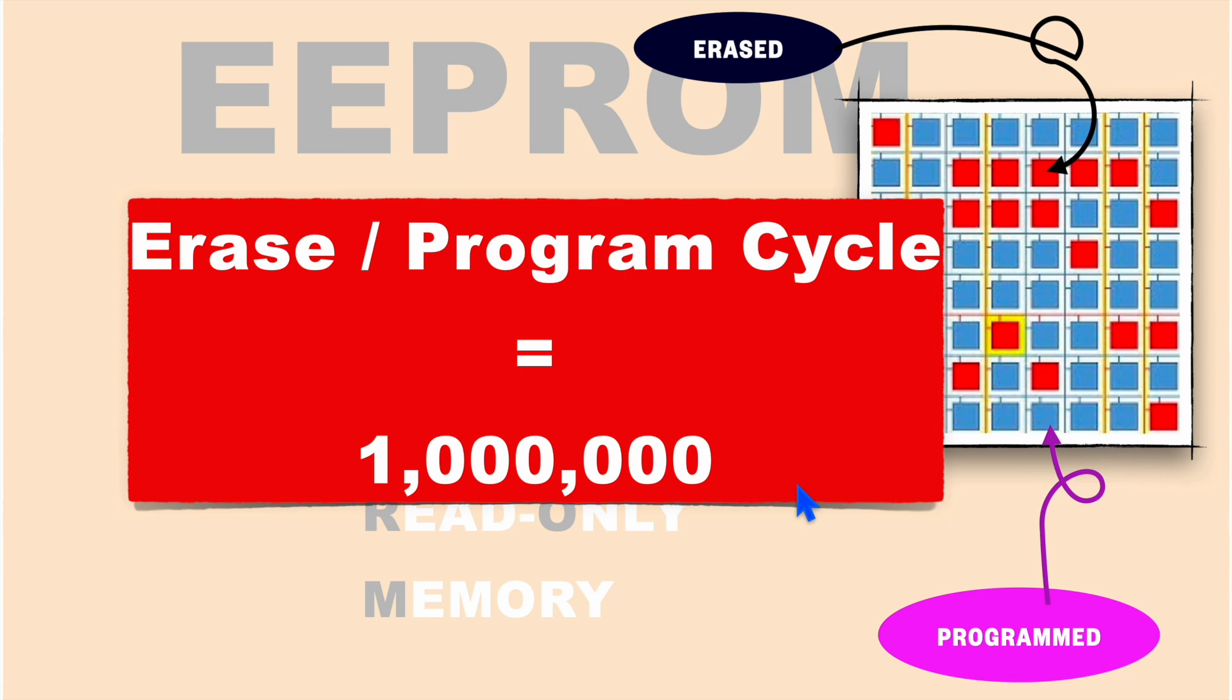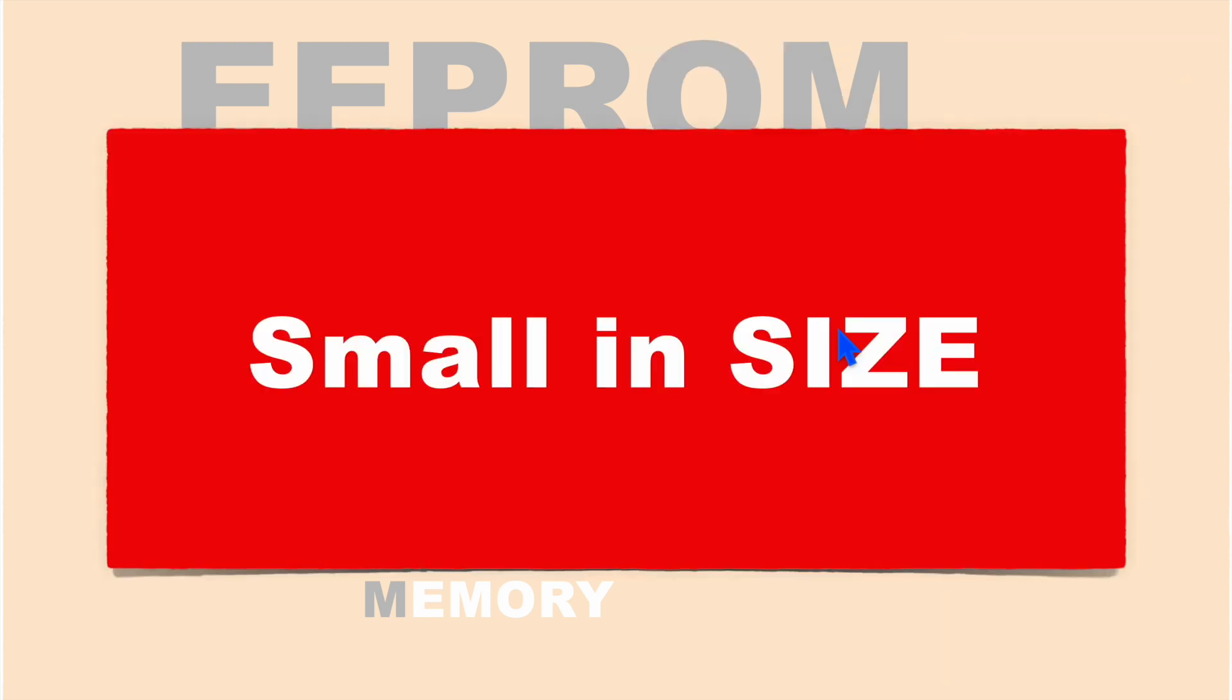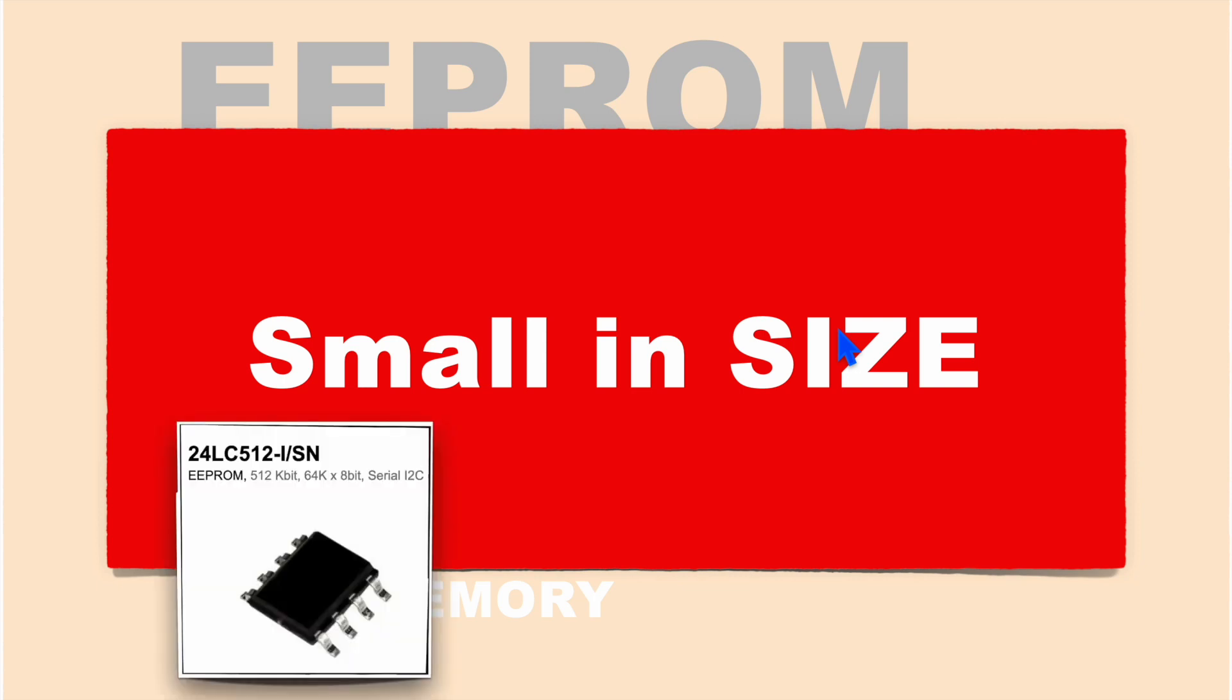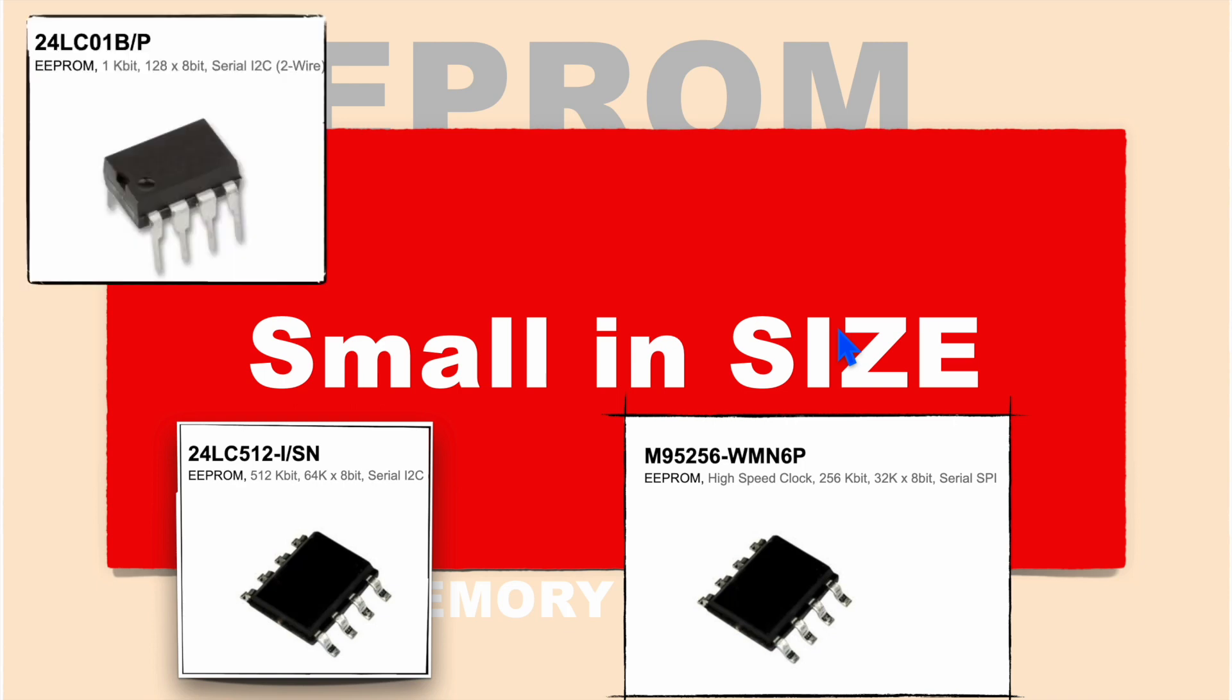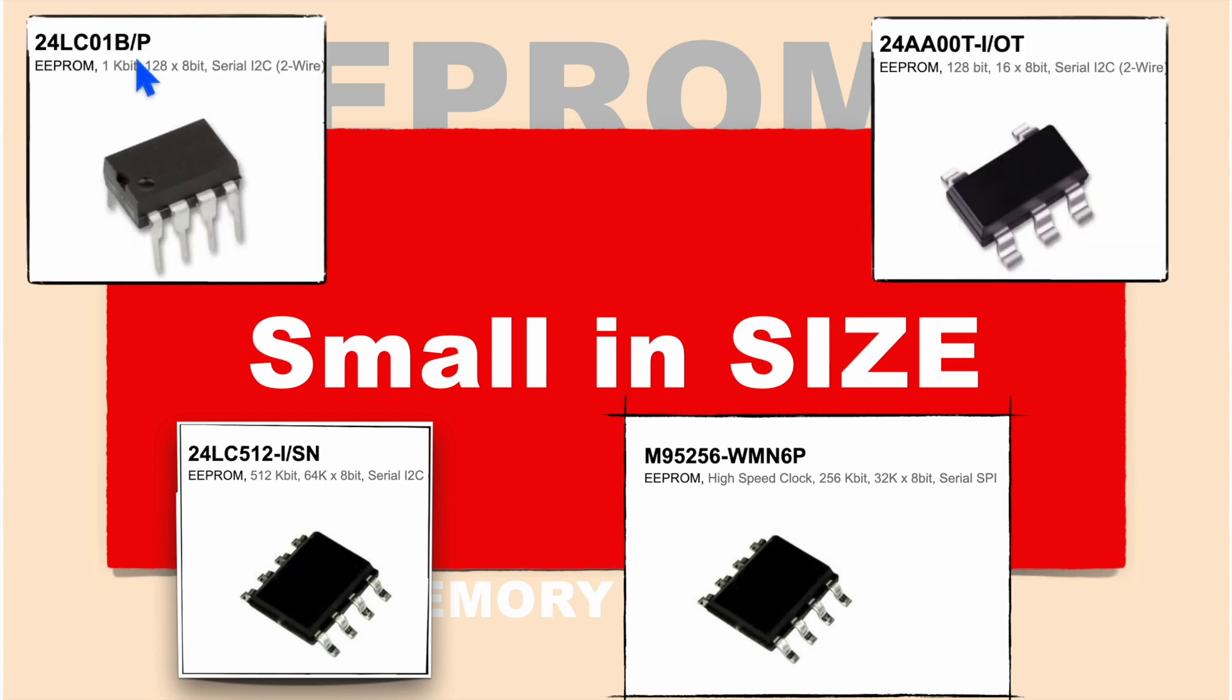So basically it has two major advantages. One is you can erase and program a single byte, and this operation you can perform for almost 1 million times. These two features make it very unique. It's available in very small sizes like 500 kilobits, 256 kilobits, even 1 kilobit and 120 bits. Since its size is very small, it is used mainly to store configurable parameters where very small memory sizes are required.